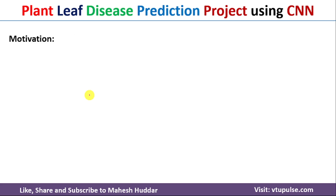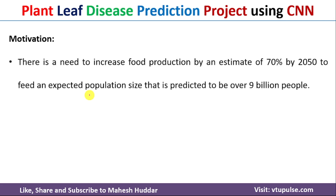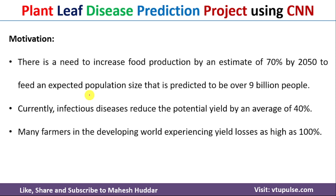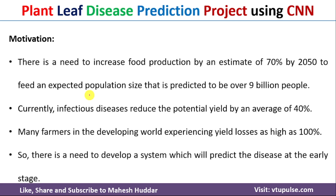The main motivation behind selecting this particular project is there is a need to increase food production by an estimate of 70% by 2050 to feed an expected population size predicted to be over 9 billion people. Currently, infectious disease reduces the potential yield by an average of 40%, and many farmers in the developing world experience yield losses as high as 100%. So there is a need to develop a system which will predict disease at the earliest stage.